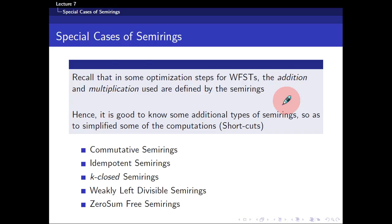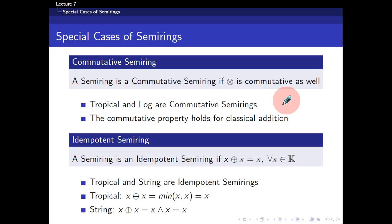Let's introduce the first one: the commutative semi-ring. A semi-ring is commutative if and only if the multiplication is commutative as well. For example, tropical and log semi-rings are commutative. The reason is simple — their multiplication is defined as classical addition, and classical addition is commutative. So just take note that tropical and log are commutative semi-rings.